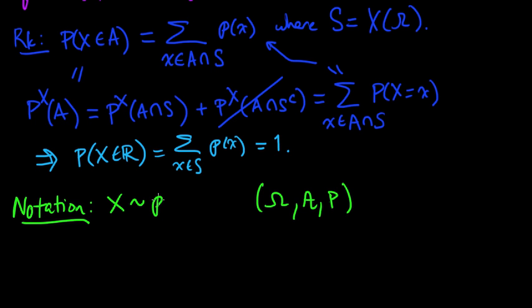But oftentimes, people will just define a probability mass function, say X is distributed according to it, and we never make any reference to the underlying probability space. So when we do that, we just mean that take any underlying probability measure space that's consistent with this definition, and that will suffice for our purposes.